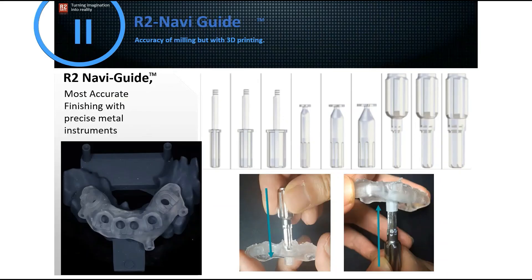The main reason behind the accuracy of the R2GATE surgical guides is actually the finishing protocol. With the R2GATE surgical guides, after 3D printing the surgical guides, we don't only rely on the accuracy of the 3D printer, which actually varies from one manufacturer to another. What we do is make sure that the inside of the surgical guide and the sleeve diameter is exactly 5 mm. We use what we call the finishing precision tools. By using these tools and passing them through the surgical guide, we make sure that the inside of the surgical guide is exactly the same diameter as the drills, which means there is no wiggle space and no room for the drills to move and deviate.